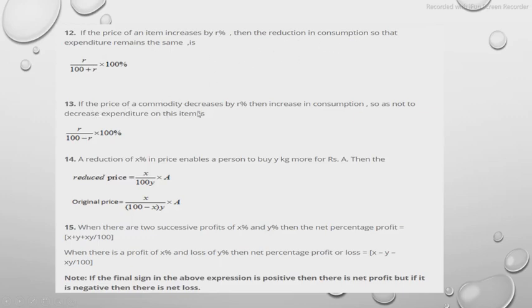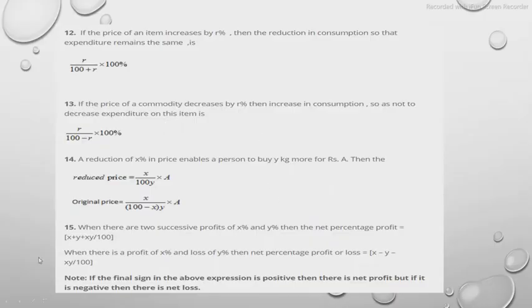Next, if the price of a commodity decreases by r percent, the increase in consumption so as not to decrease expenditure is given by a corresponding formula. The price is decreasing by r percent, and we want to find how much more we can consume while spending the same amount.